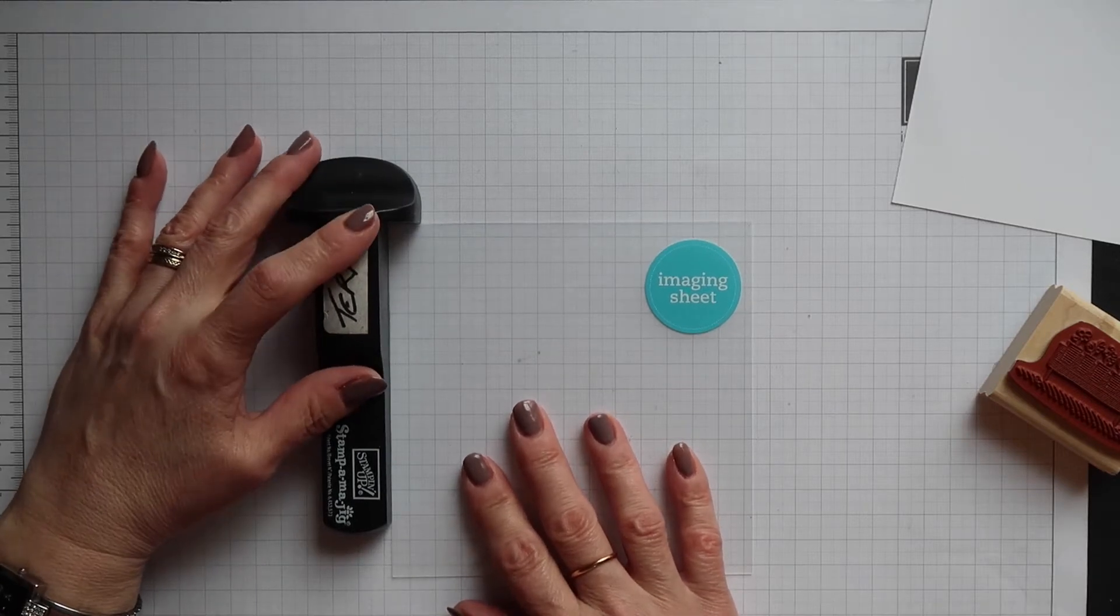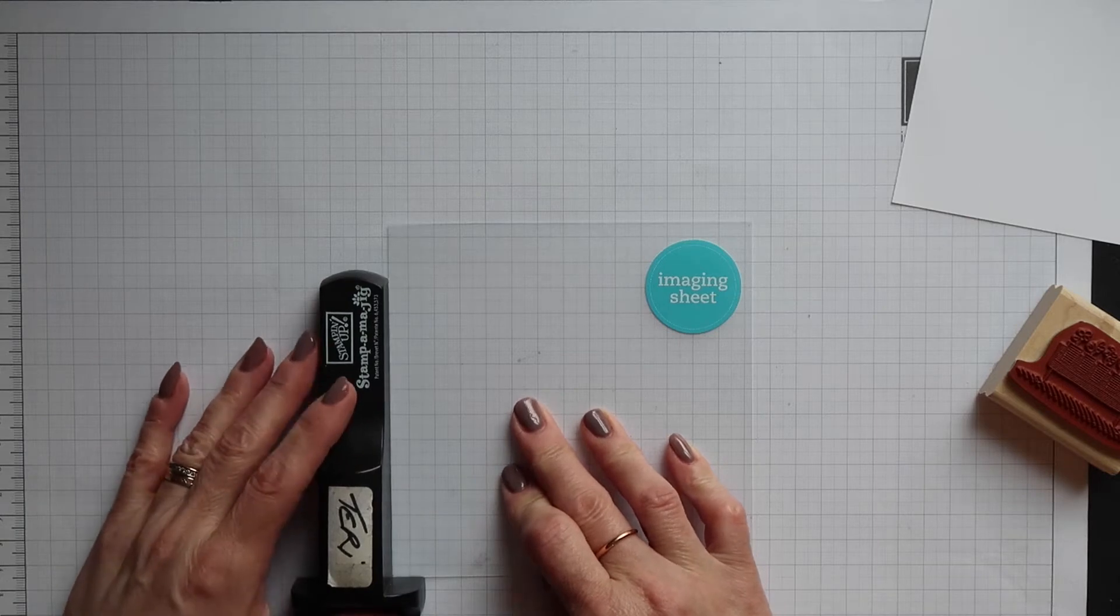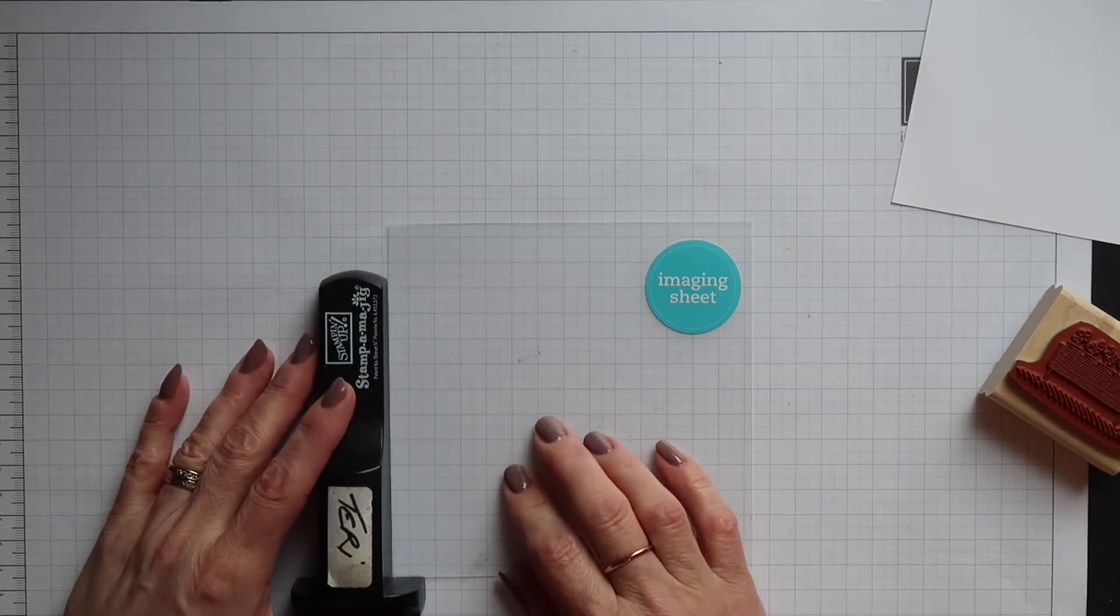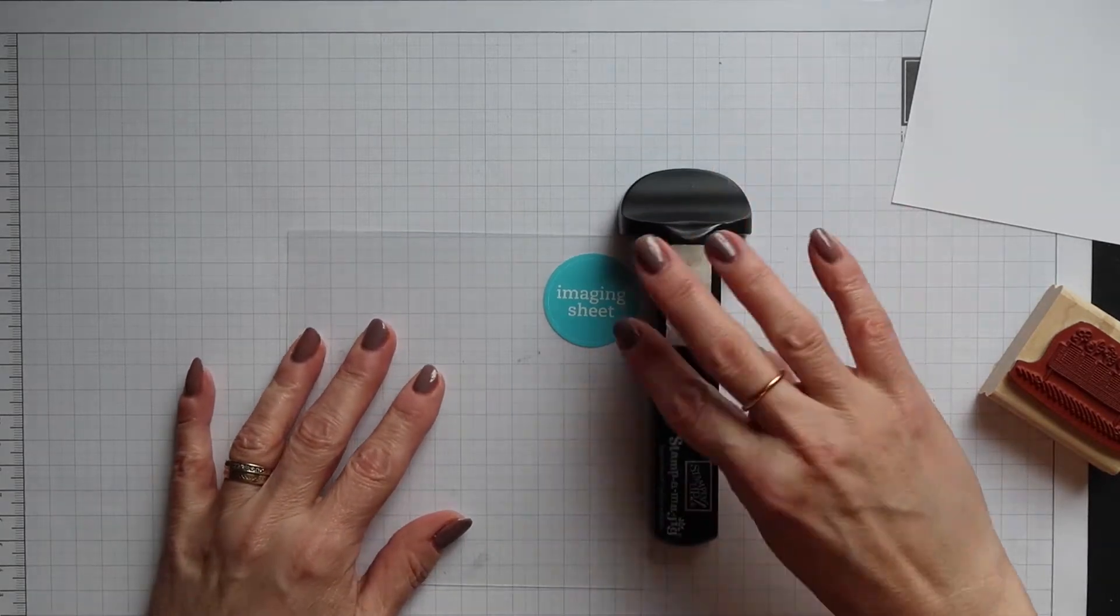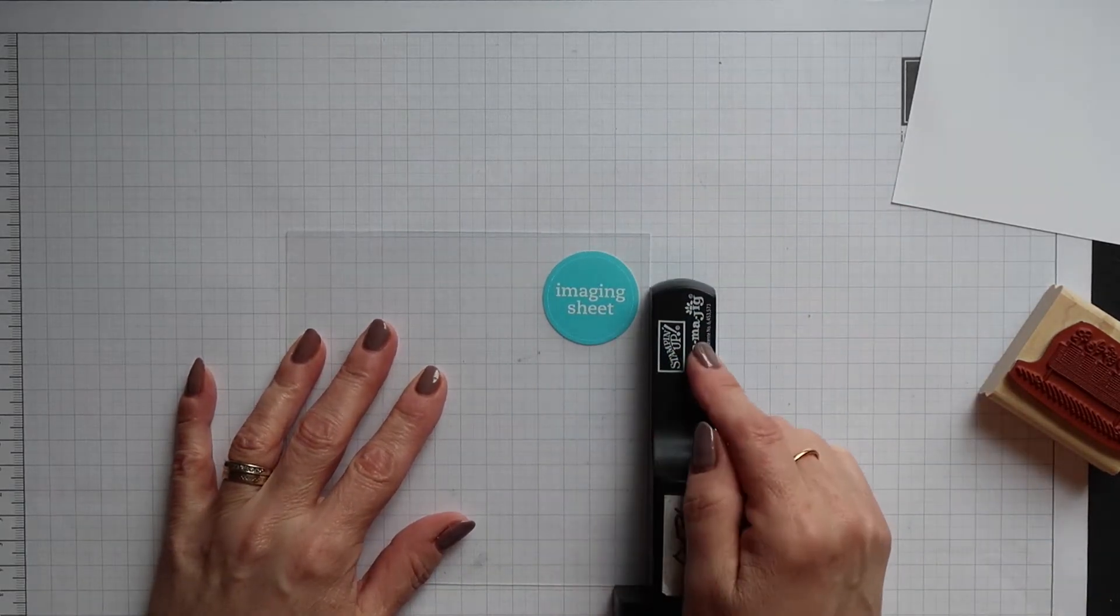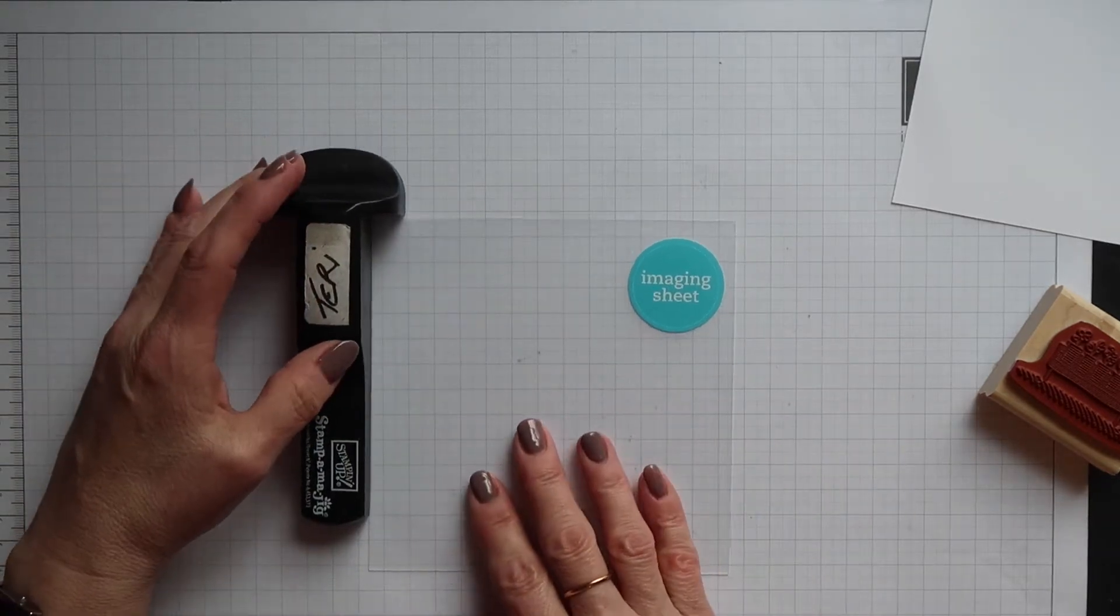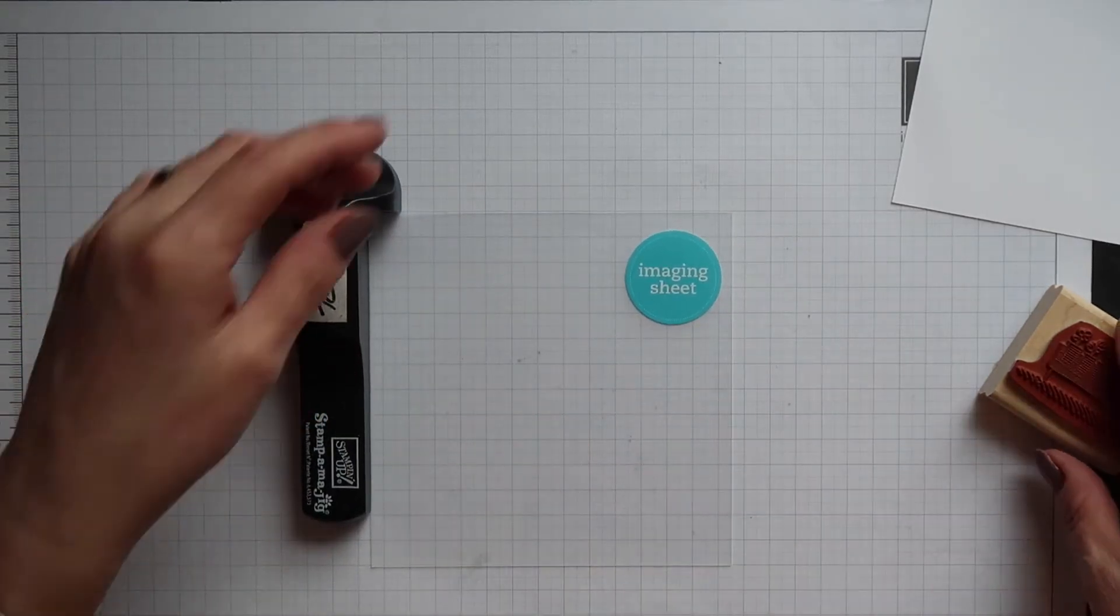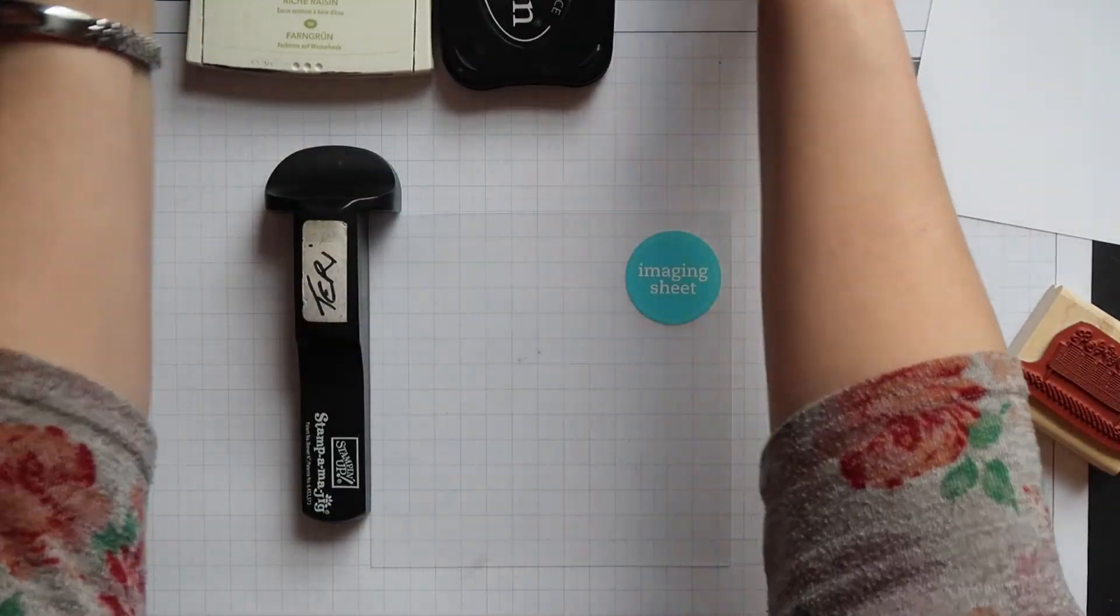To start, you need to position the handle on one of the corners of the plastic imaging sheet. Now this could be top left or bottom left, or if you're left handed this could be the top right or the bottom right. All you have to do is remember which corner you're going to use and stick with it so it doesn't get confusing. I've always used the top left.